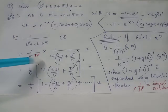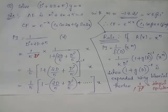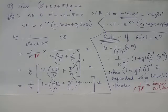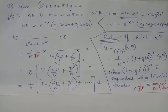Here you could consider D raised to p equals D raised to 0. In general, if you had taken a common power of D outside in order to have a convenient binomial expansion for this operator, then you must evaluate 1 by D raised to p as the integral operator.